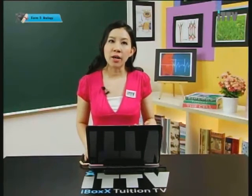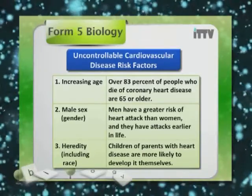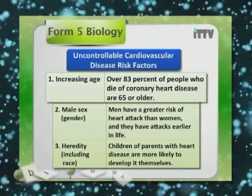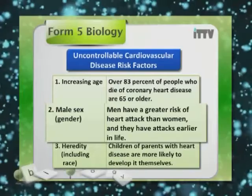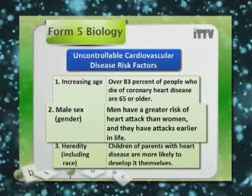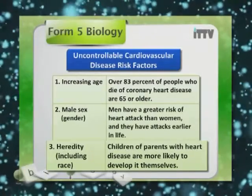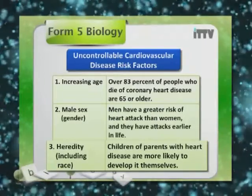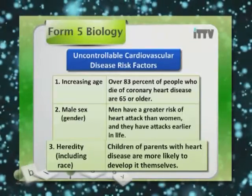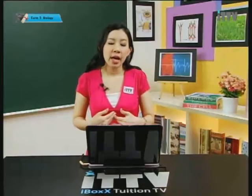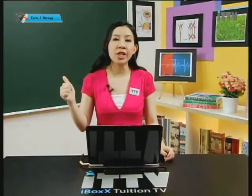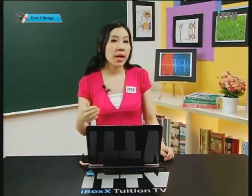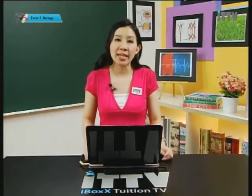Uncontrollable risk factors include increasing age — over 83% of people who die of coronary heart disease are 65 or older. Male sex is another factor — men have a greater risk of heart attack than women and have attacks earlier in life. The third uncontrollable risk factor is heredity, including race — children of parents with heart disease are more likely to develop it themselves. So the three uncontrollable risk factors are age, gender, and heredity, with males having a higher predisposition to heart attacks than females.